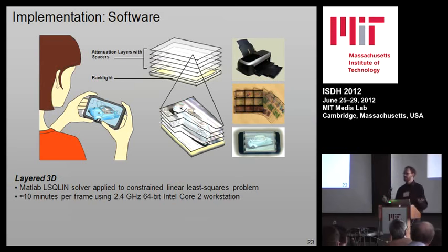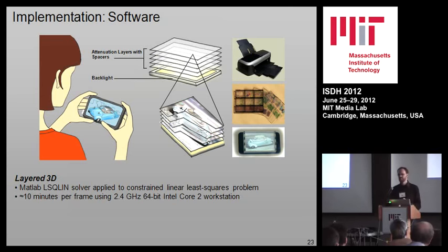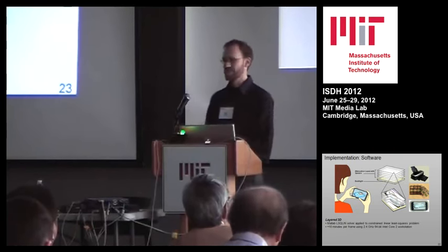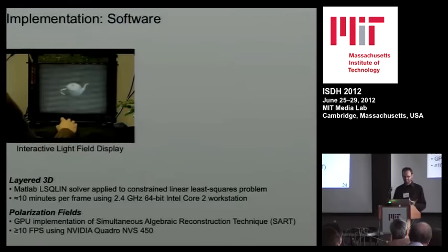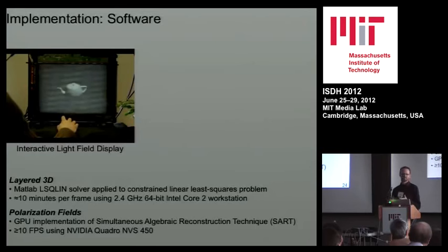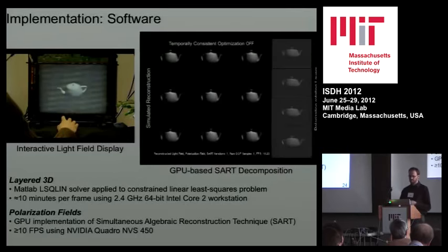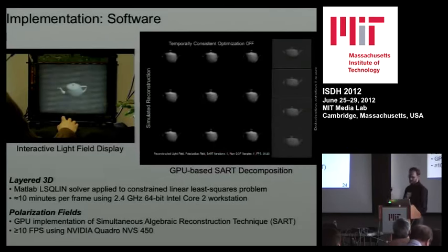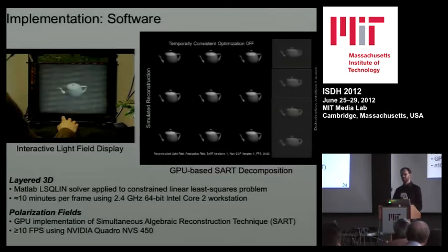Now I'll talk about the solver — how do we make this run in real time? If we naively run this in MATLAB using MATLAB's least-squares minimizer, the solver takes about 10 minutes on a pretty modern computer. That's acceptable for static displays where you do it once and forget about it, but it's really not acceptable if you want to watch video. What we've been able to do is map the entire framework to efficient GPU-optimized steps that fit into the existing graphics pipeline, allowing us to run basically the same reconstruction at something like 10 frames per second on a not very high-end card.